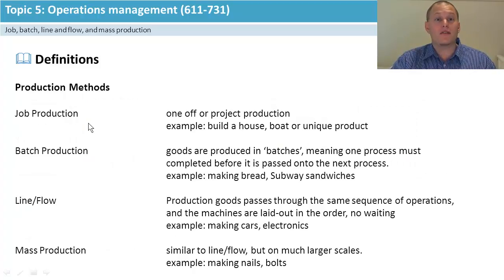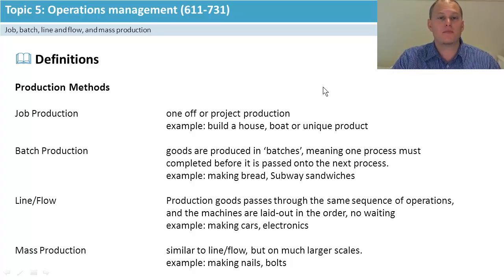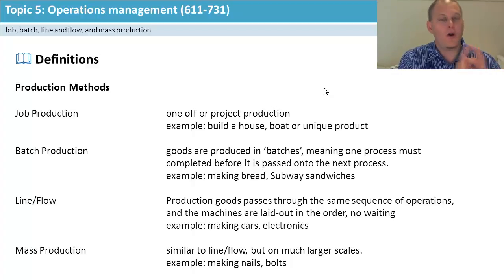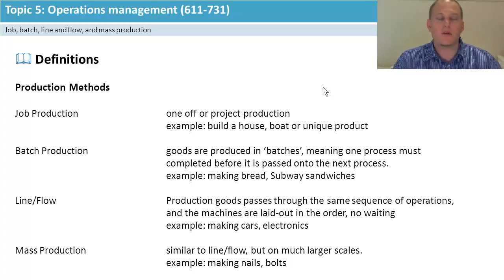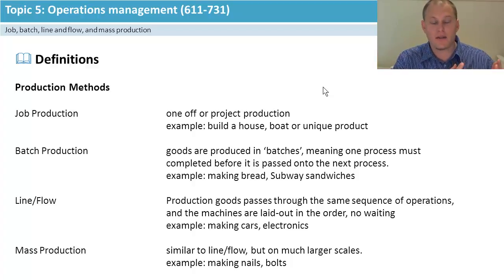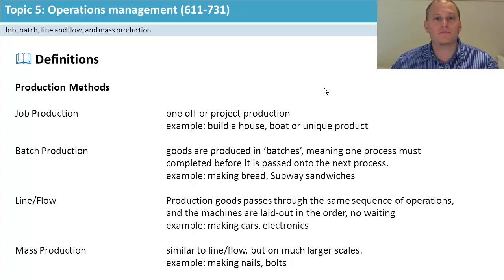The first keyword is job production — these are one-off production methods. Think about building a house, making a diamond ring for a wedding, or doing a speedboat. The idea is you do the whole part in one section, then move on to the next stage. You put the concrete in, build up the wooden frames, do all the electrical wiring, stick the roof on, put the cladding — each completed stage before moving on.